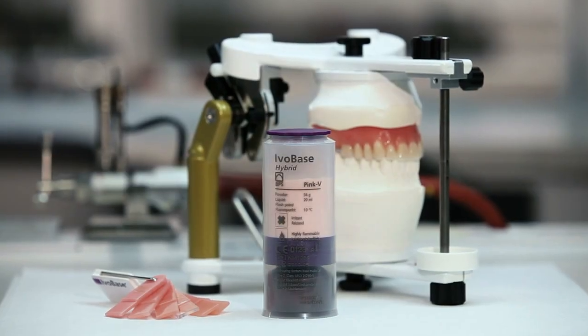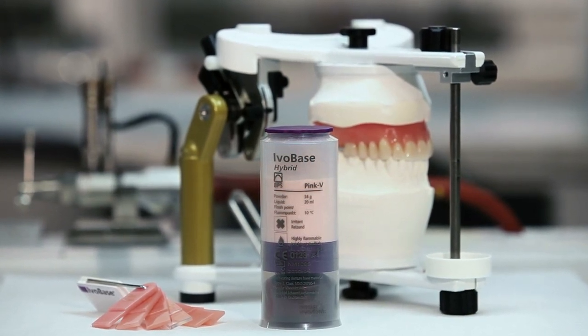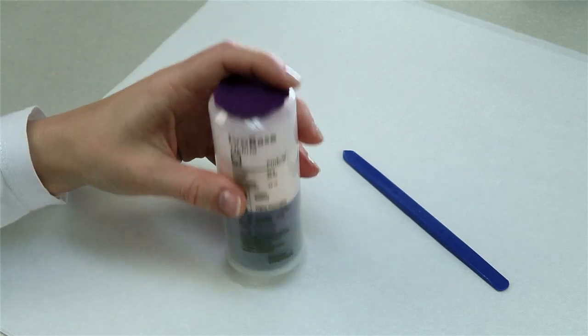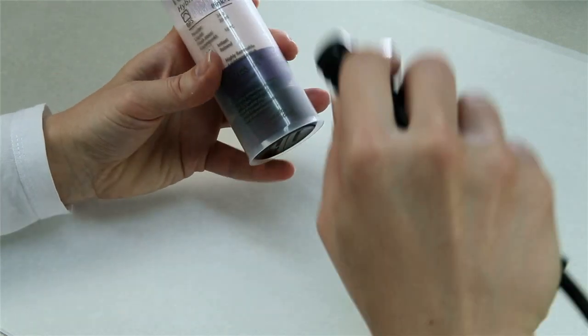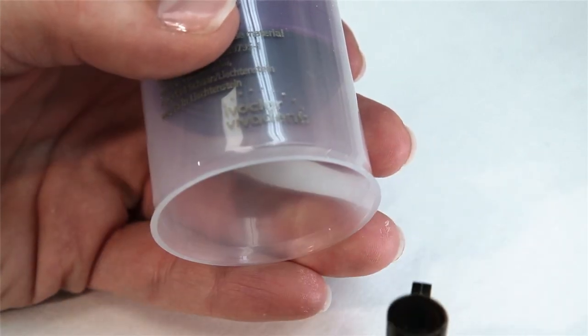One capsule is sufficient for the injection of a maxillary or mandibular complete denture. A short blast of compressed air between the monomer container and the capsule renders the monomer container easy to remove from the capsule.